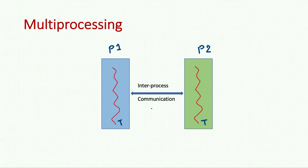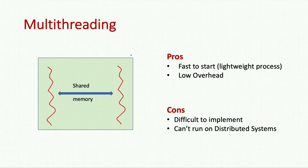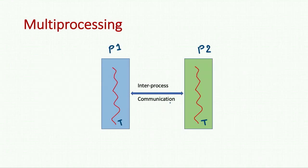If some communication is required between P1 and P2, they communicate by inter-process communication. As compared to multi-processing, in multi-threading we have one process, and within that process we can have multiple threads. In this example we have two threads, T1 and T2.